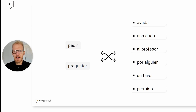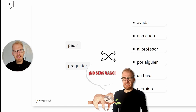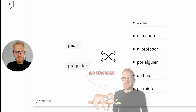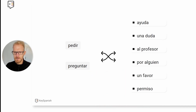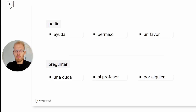Can you relate each verb with the appropriate pairing? Like 'pedir' — can you pair it with 'ayuda,' 'una duda,' 'al profesor,' 'por alguien,' 'un favor,' 'permiso'? Don't be lazy — 'no seas vago' — participate with me, pause the video if you need to, and try to make the appropriate connections. So: we say 'pedir ayuda,' 'pedir permiso,' 'pedir un favor,' but 'preguntar una duda,' 'preguntar al profesor,' or 'preguntar por alguien.'